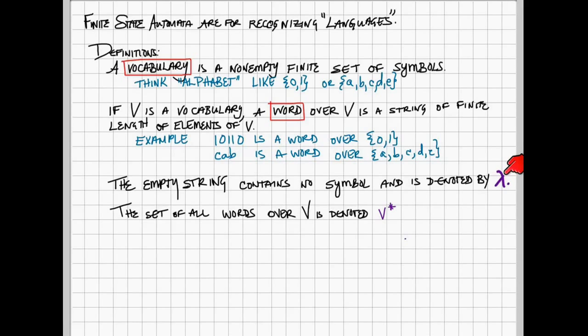And then we can talk about a set of all possible words over our vocabulary. And this set of words is called V star.